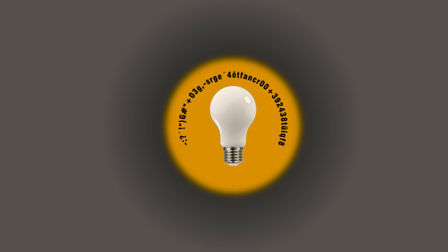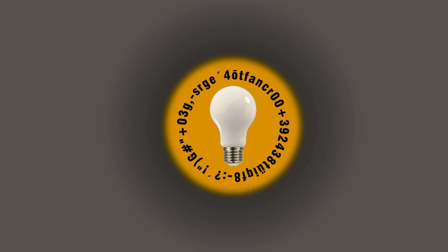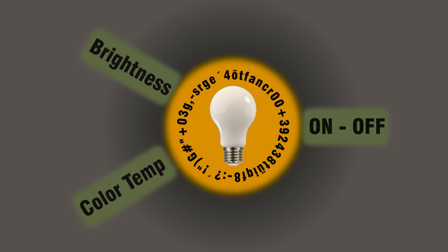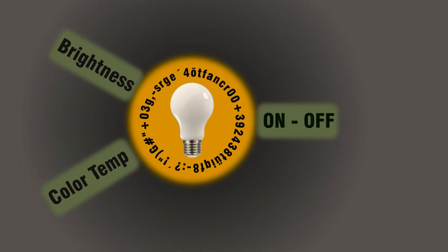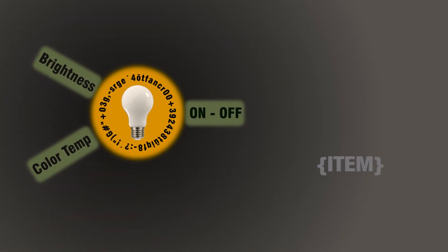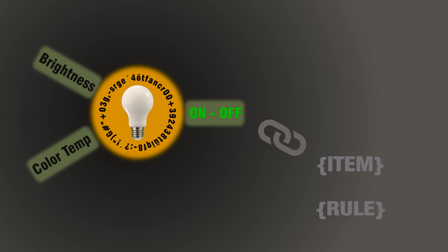So to recap everything with the light bulb example: a light bulb is a thing. A binding takes the specific language and behavior of a thing and makes it understandable to OpenHAB by creating channels to represent its properties. An item is a virtual representation of functionality. By linking an item to a channel, the channel becomes enabled and we can control that channel through that item by writing a rule.